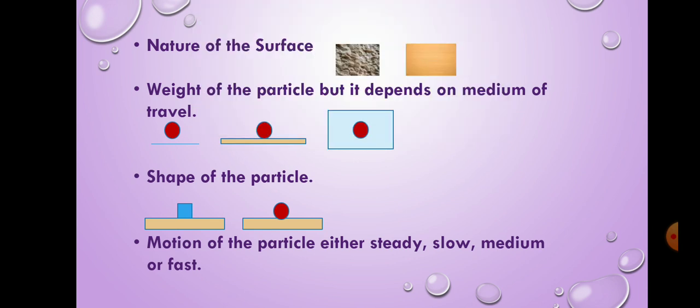And the last one is motion of the particle. Either steady, slow, medium, or fast. How is it responsible? Do you know? If we rotate the particle with slow motion, it causes more friction. So the motion of the particle also is responsible for the cause of friction.